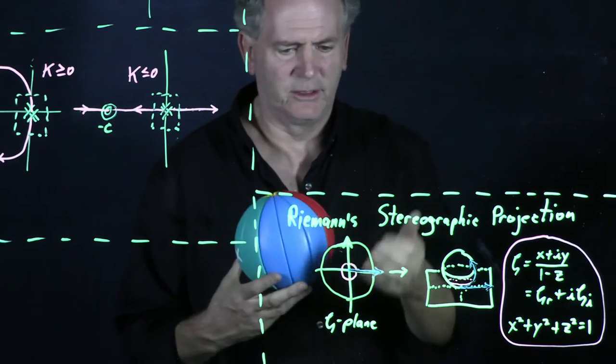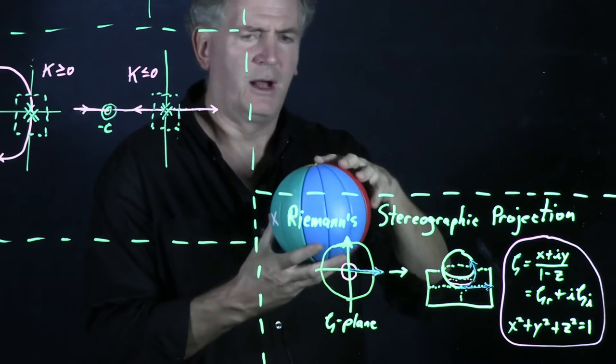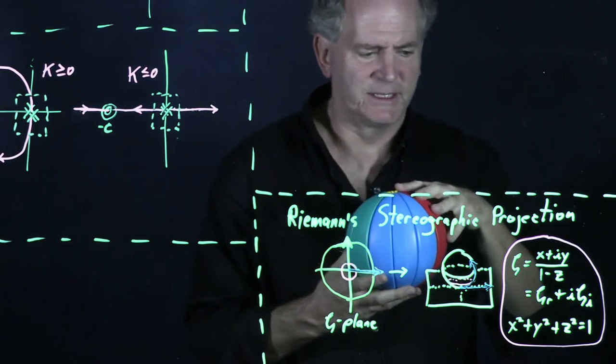And so this mapping is of course singular. We can't visualize it in the complex plane, but on the Riemann sphere, it makes perfect sense.